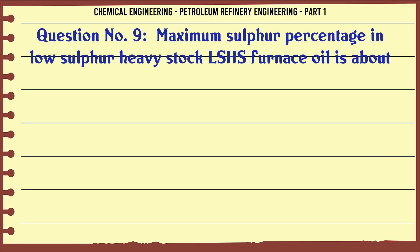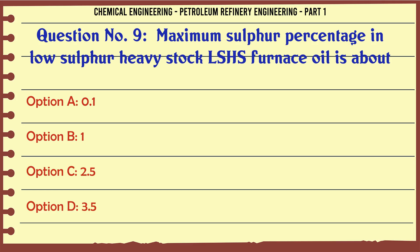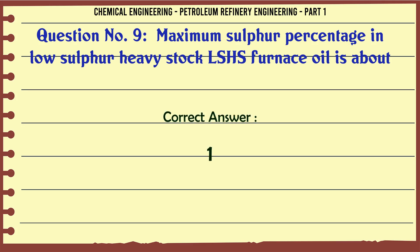Maximum sulfur percentage in low sulfur heavy stock (LSHS) furnace oil is about: A. 0.1, B. 1, C. 2.5, D. 3.5. The correct answer is 1.